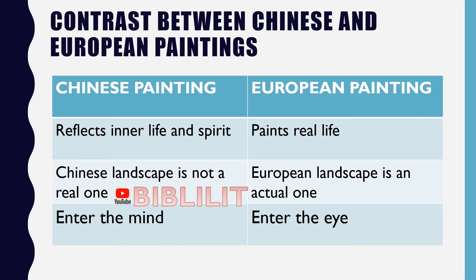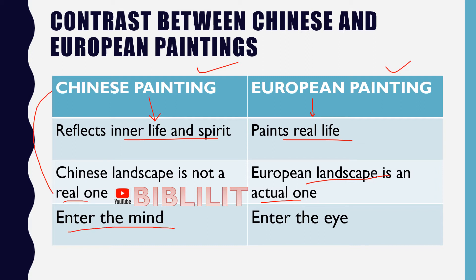There is a contrast between Chinese and European paintings. Chinese paintings reflect inner self, inner life, and spirit, while European paintings depict real life. A Chinese landscape is not a real one, whereas a European landscape is an actual one. To view a Chinese painting, the viewer must enter the mind of the painter, but to view a European painting, he must enter the eye of the painter — seeing what the painter sees.